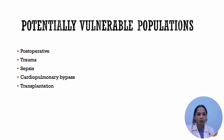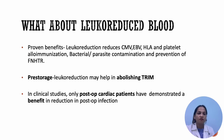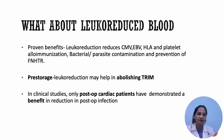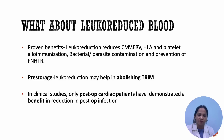Potentially vulnerable populations for TRIM are post-operative patients, trauma and sepsis patients, cardiopulmonary bypass patients, and transplantation patients. Regarding the role of leukoreduction in TRIM: RCTs are not proving that leukoreduction reduces the effect of TRIM. However, we should promote leukoreduction because of its proven benefits — reduction of infections like CMV or HIV, prevention of HLA-platelet alloimmunization, and prevention of febrile non-hemolytic transfusion reactions. Pre-storage leukoreduction can help in abolishing TRIM, and in clinical studies, only post-operative cardiac patients have demonstrated a benefit in reducing post-operative infections.